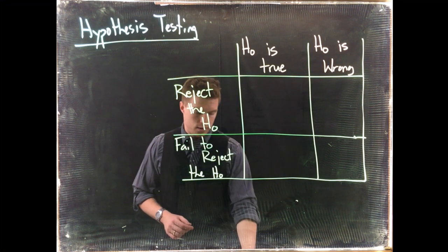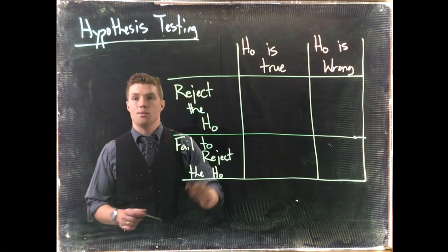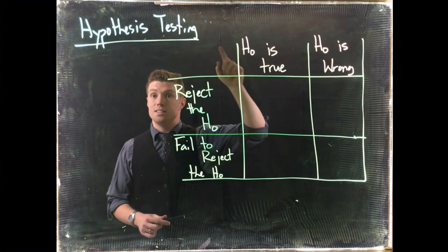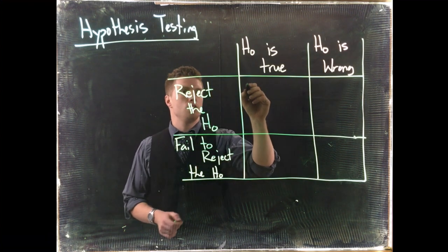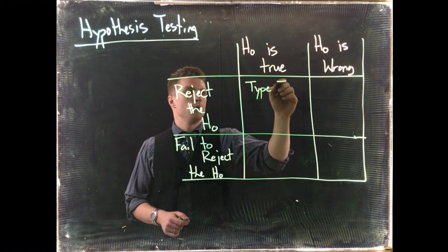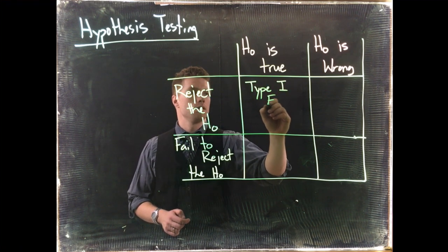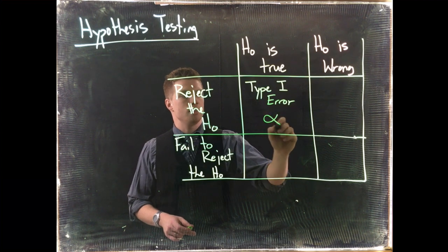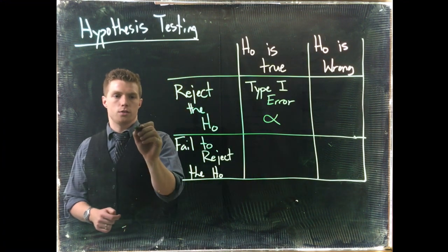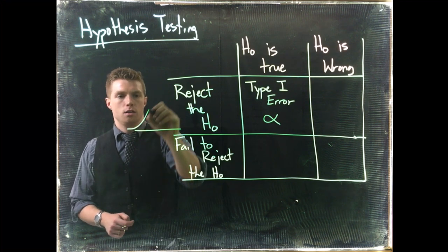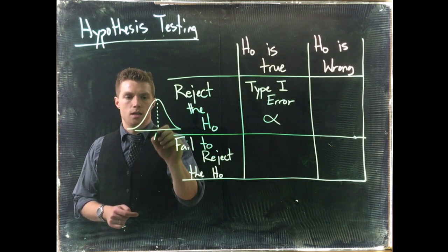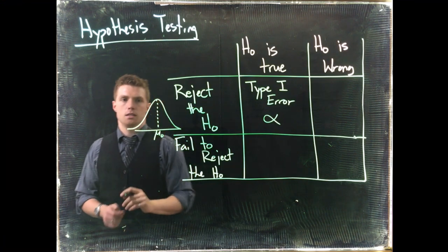When we've been talking about alpha, that's been saying that we would reject the null hypothesis when the null hypothesis is actually true. This is known as a Type 1 error, which is known as alpha. We've talked about this already. Let me draw a little picture of what this would look like — this is our null hypothesis saying that the mean is some value.